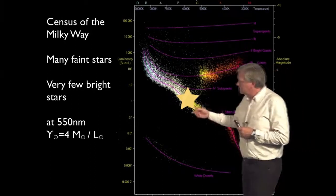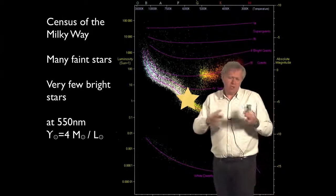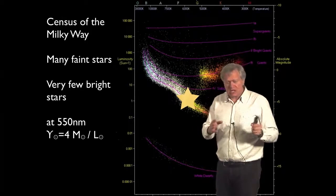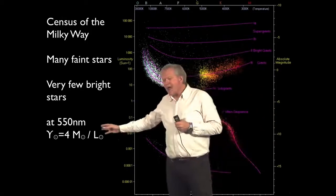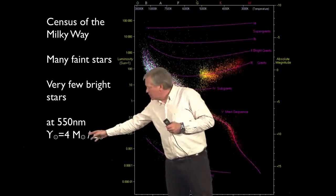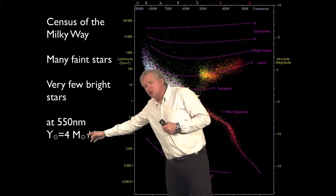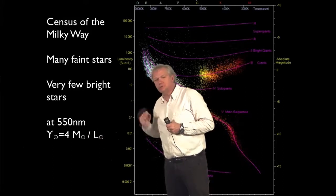The final calculation, which is detailed but really is just accounting, tells us that the average star in the Milky Way has four solar masses per solar luminosity.